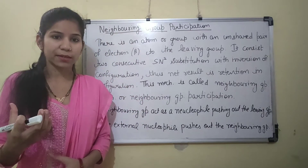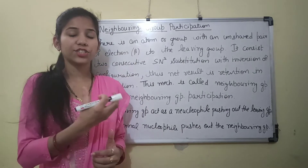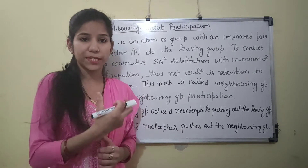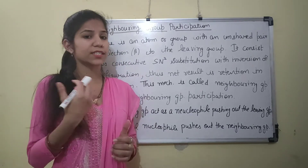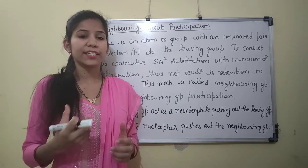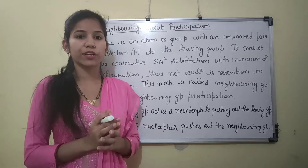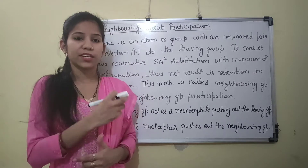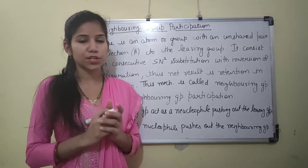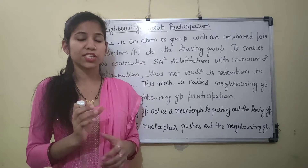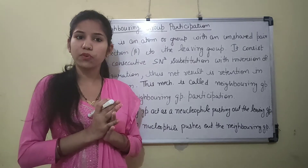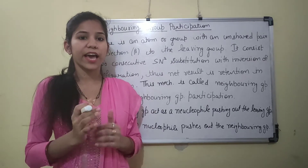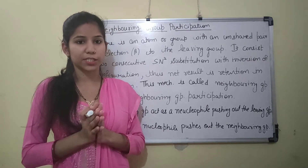There is an atom or group present which has an unshared pair of electrons, and this atom is present at the beta position from the leaving group. This is a two-step process consisting of two consecutive SN2 substitutions. Inversion in configuration occurs at each step, and the net result is retention in configuration. Inversion means the change in configuration of a molecule, and retention means the molecule has the same configuration as it had initially.